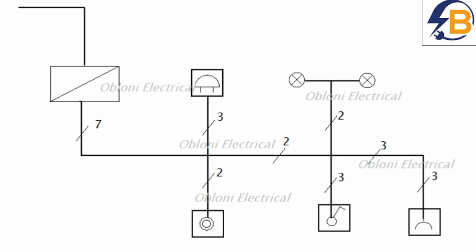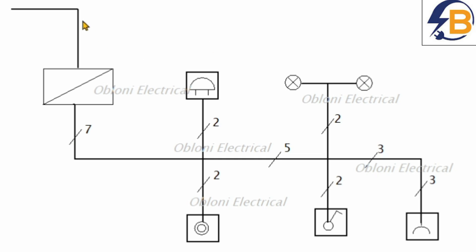First of all, we have to know what everything in this wiring is representing or standing for — then we are able to make meaning out of this plan. Starting from the lines: the lines in an electrical plan represent the route or path that the wires take to connect to the various components. The symbols represent the components or the various items or accessories that we are connecting in the wiring.